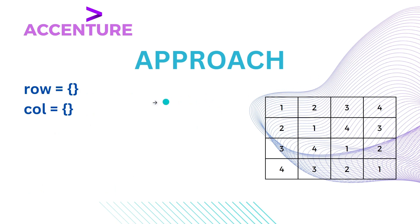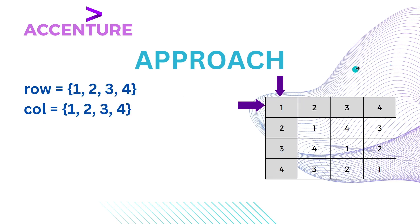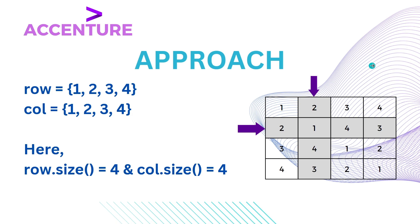First, our sets - let's call them row and col - are empty. Now we will check all the elements from first row and first column. We will store each element in the row and col set. Now at the end of first row and column we will check the sizes of both sets if they are equal to 4. Since they are equal, we will move on to the next row and column and clear the values from both the sets after each row and column.